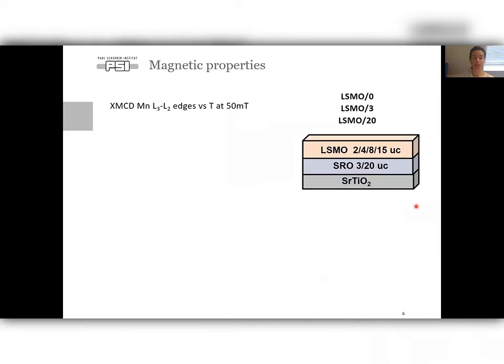In order to study the difference between two interfaces, between LSMO SRO interface and single LSMO interface, bilayers and single layer films were prepared by pulsed laser deposition. Films were deposited on TiO2-terminated strontium titanate. LSMO thickness was varied between 2 and 15 unit cells, SRO thickness was varied between 3 unit cells, so it's a non-magnetic and non-metallic layer, and 20 unit cells is a ferromagnetic and metallic layer.